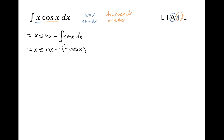And we have a double negative there, which is going to turn into a plus cosine x, and then plus our arbitrary constant c. So this is equal to x sine x plus cosine x plus c.